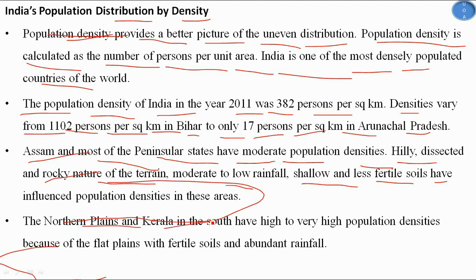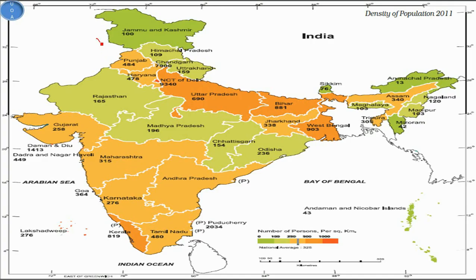The North Plains and Kerala in the south have high to very high population densities due to flat plains with fertile soils and abundant rainfall. Looking at the map: Madhya Pradesh has around 196 persons per square kilometer, Rajasthan 165, Chhattisgarh 154, Uttar Pradesh 690, and the National Capital Territory of Delhi has 9,340 persons per square kilometer.